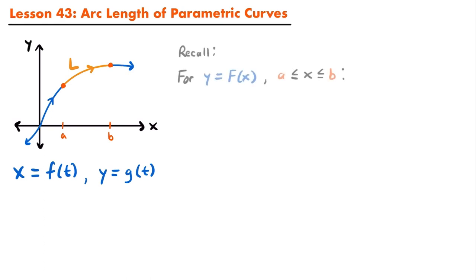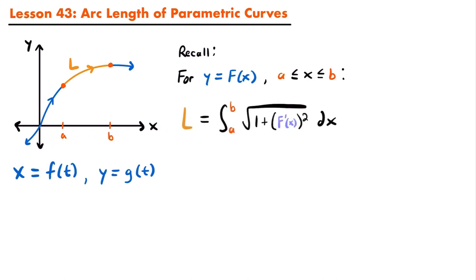If we were working in terms of x — meaning this curve would be represented by y equals capital F of x — and we wanted to know the arc length between those two x values a and b, we could calculate that using this formula: the length equals the integral from a to b of the square root of 1 plus the derivative of F of x, squared, times dx.